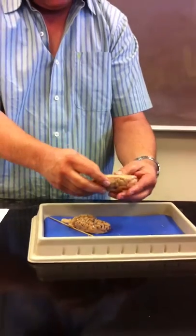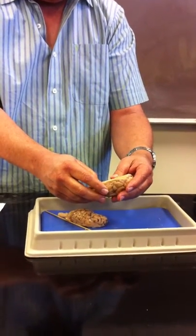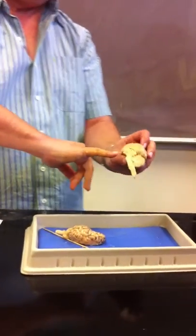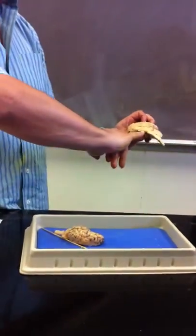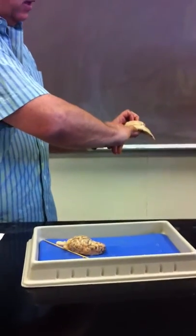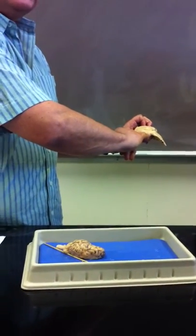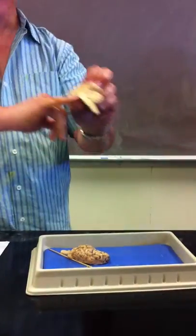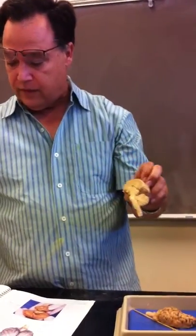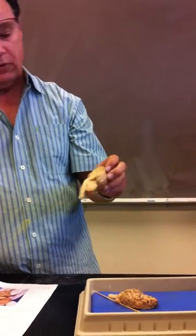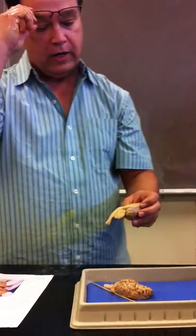Mammillary bodies. This is the hypothalamus. That's the optic nerve. So right behind the optic nerve is the mammillary bodies. The infundibulum is not going to be there because it tends to get torn off.